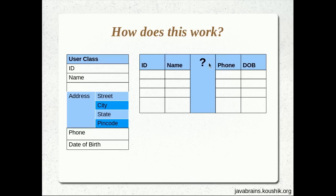Now the question is, how do we save this Address object in the user table? It's not a string anymore, so we cannot have it inside one column. We have four member variables in this Address object — how are we going to save all four? We'll look at the simplest implementation for this scenario in this tutorial, and look at more advanced implementations later on.